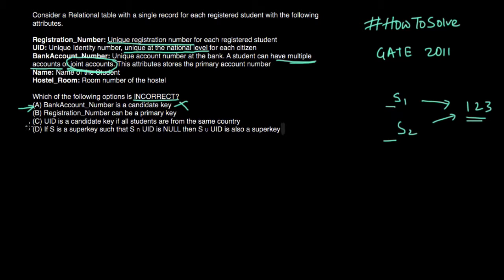Now let's go through other options. So we have been given registration number can be a primary key. So it is correct because it has been given that unique registration number for each registered student. So as it is unique for each registered student it can serve as primary key or candidate key. So this is a correct option.